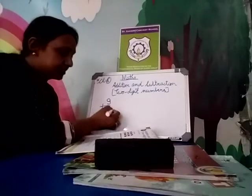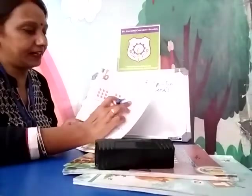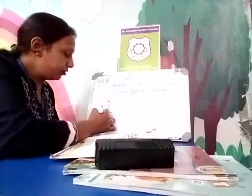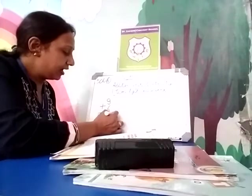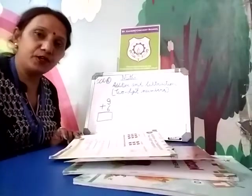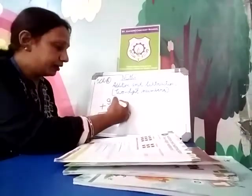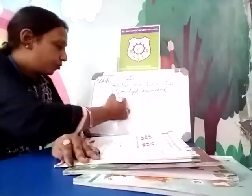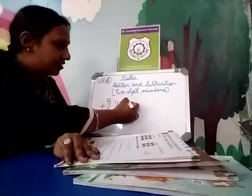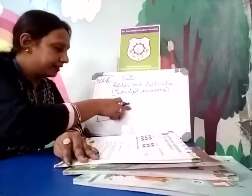First you write the first digit, which is 9, and the second digit, which is 6. Now how will you add? By drawing lines or making circles — whichever is easier for you. Here we will draw lines: draw 9 lines for the number 9.